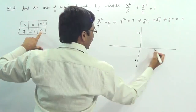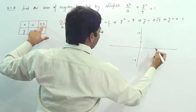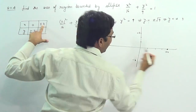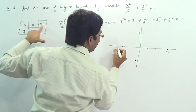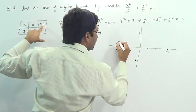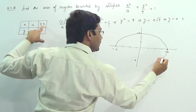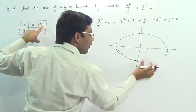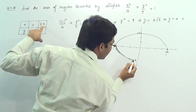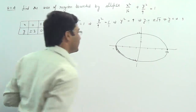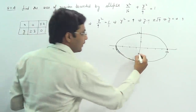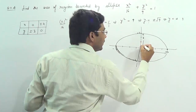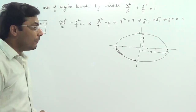On the x-axis, x is plus 4 and minus 4. So this is the graph of the ellipse, where this length is 4 and this length is 3.